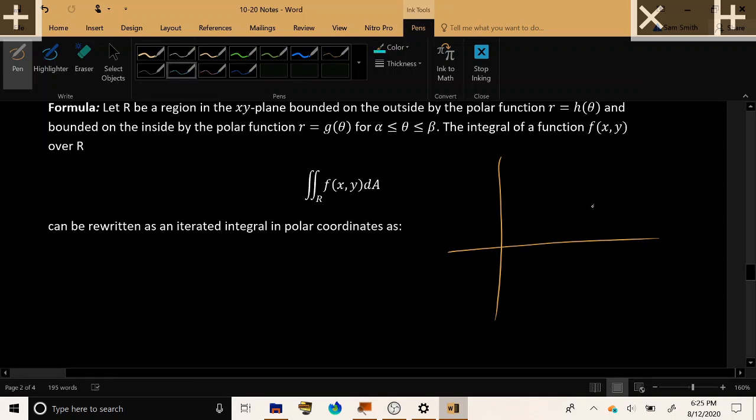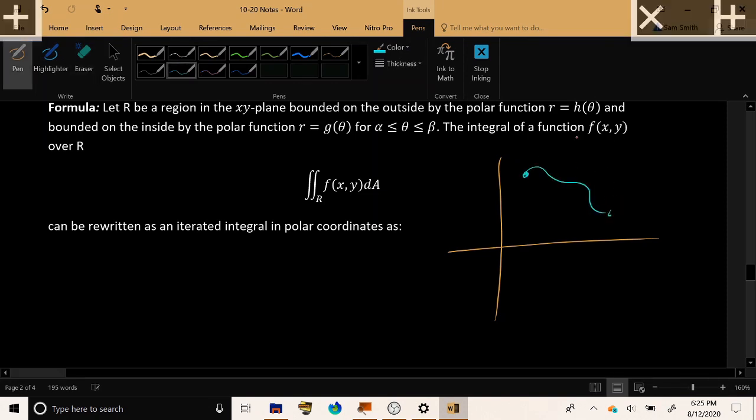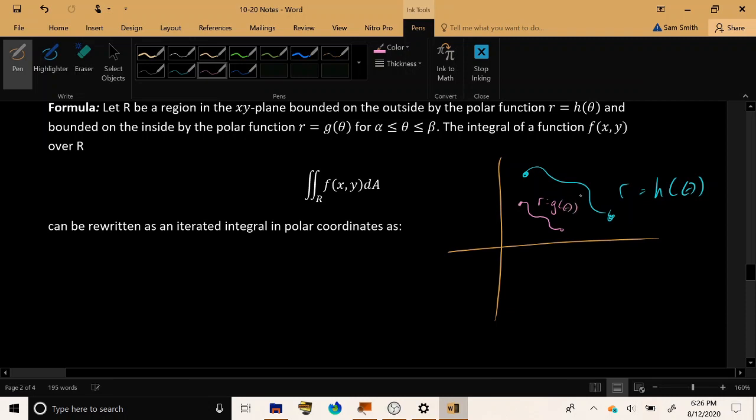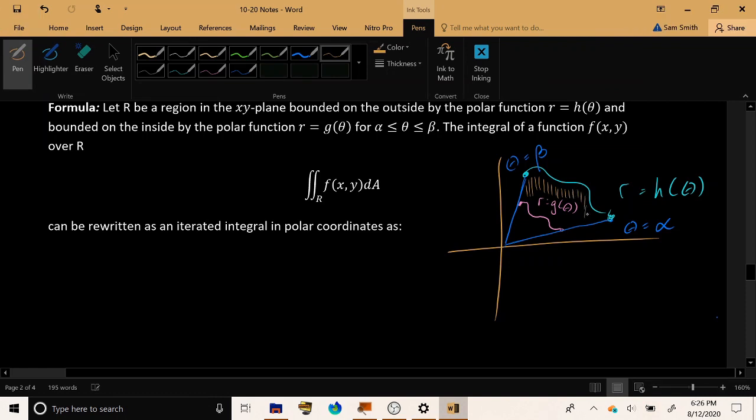Let me do a sketch to show what's going on. We're going to have some curve which is far away from the origin, this is the outer function r equals h of theta. Then we'll have some curve which is closer to the origin, this is r equals g of theta. We're going to be considering these two functions for values of theta between some lower angle theta equals alpha and some upper angle theta equals beta.